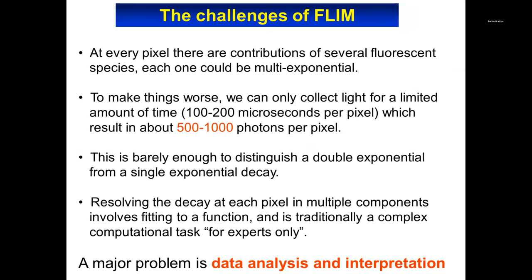The challenges of FLIM are not the same as in cuvette-based measurements where you have essentially purified systems. In a typical pixel of an image, you have the contribution of cellular fluorescent species, and each one could be multi-exponential. You cannot purify things in a tissue or in a cell because the cell is expressing whatever proteins it expresses. At every pixel, you have a contribution of cellular fluorescent species, each of which can be multi-exponential — this is a major problem in FLIM.